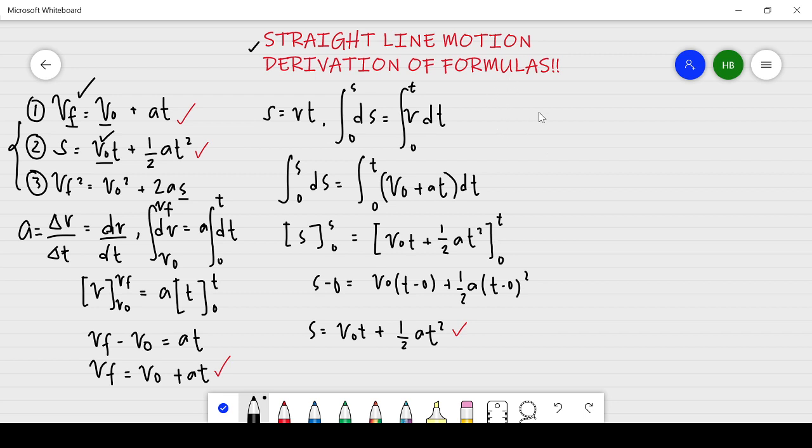We're going to proceed to the third equation. We all know that a is equal to dv over dt. And v is equal to ds over dt. I just divided both sides by dt, so ds over dt is equal to v.